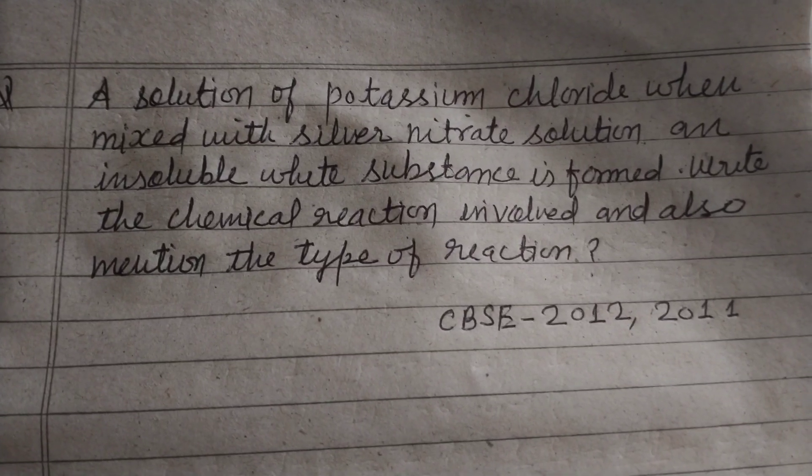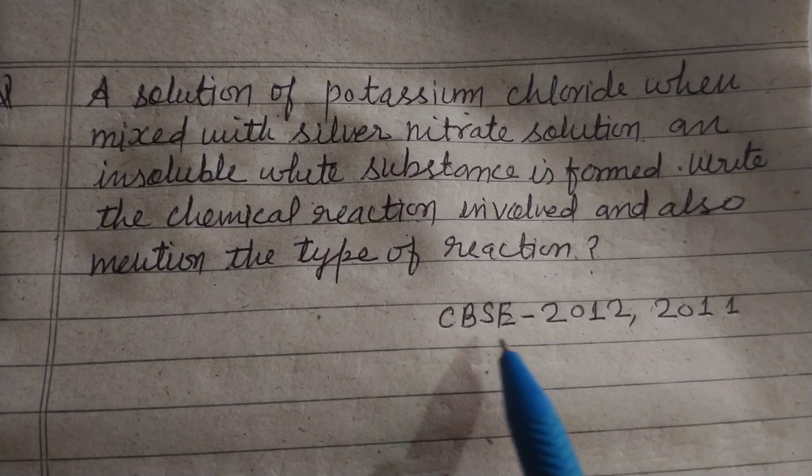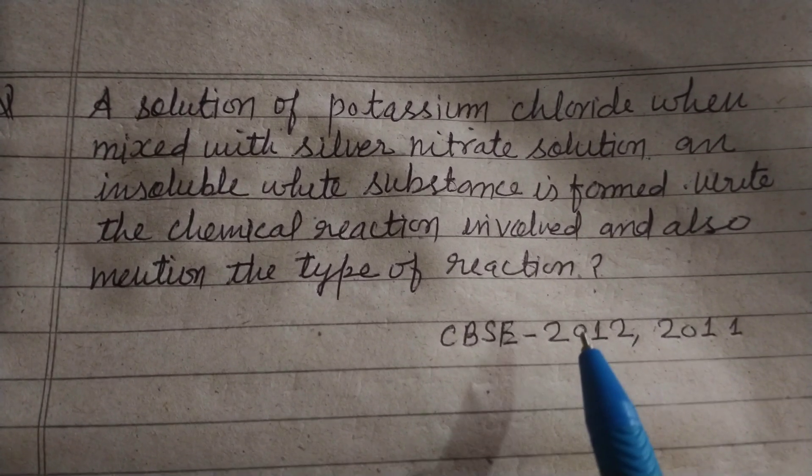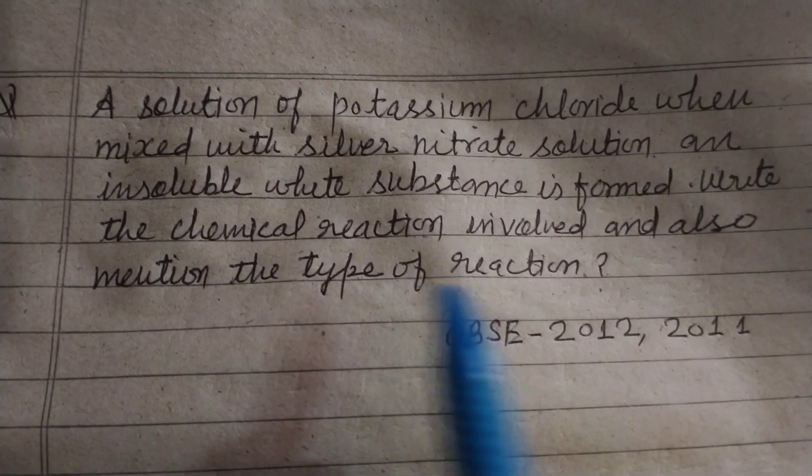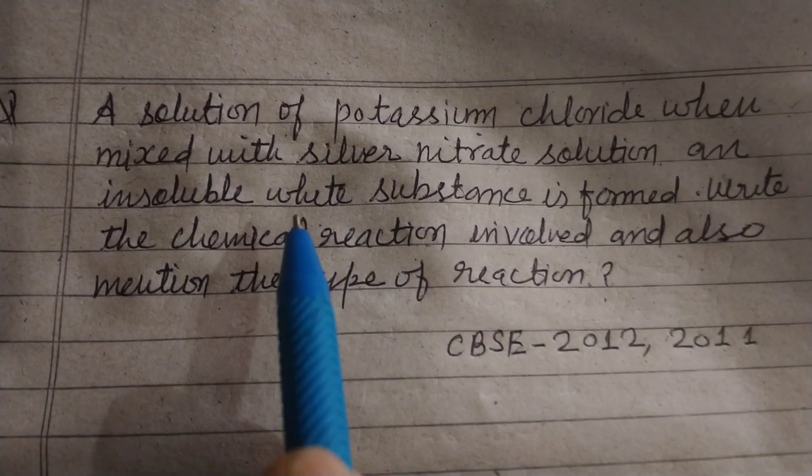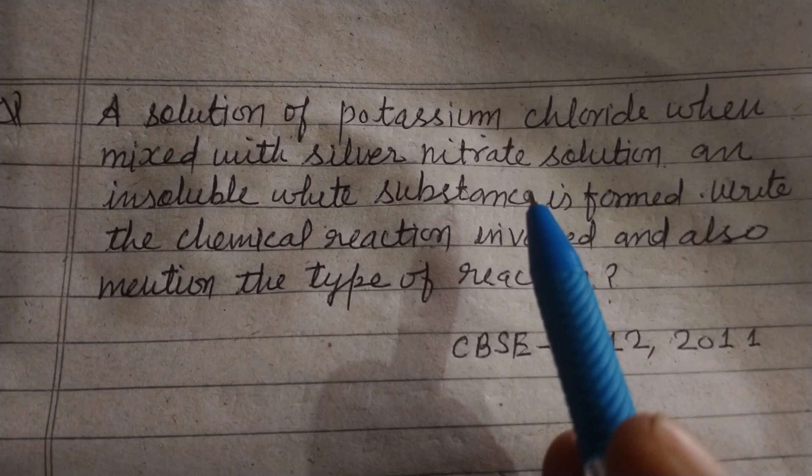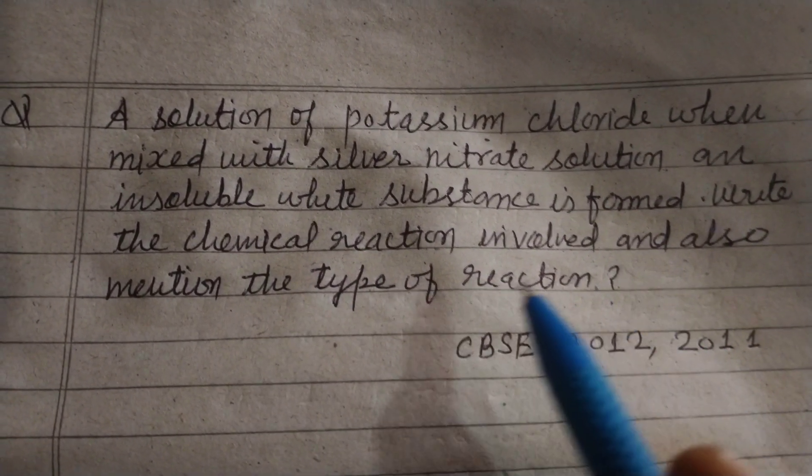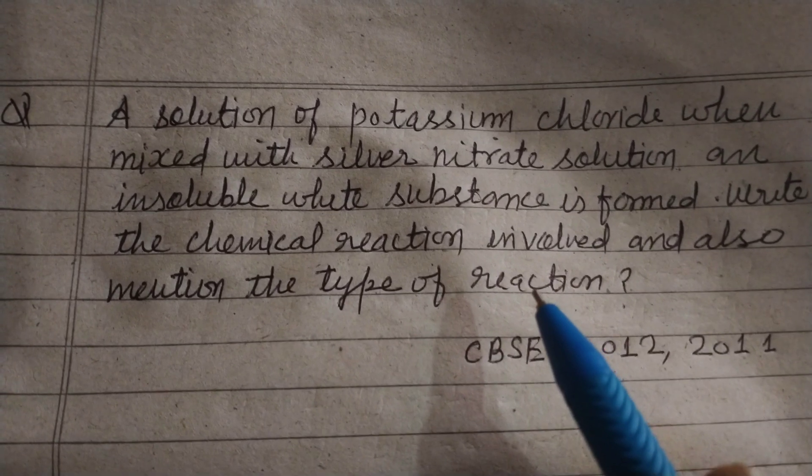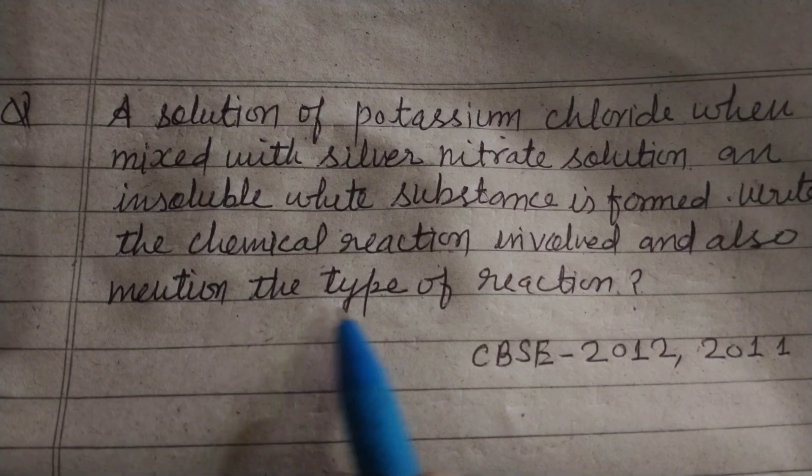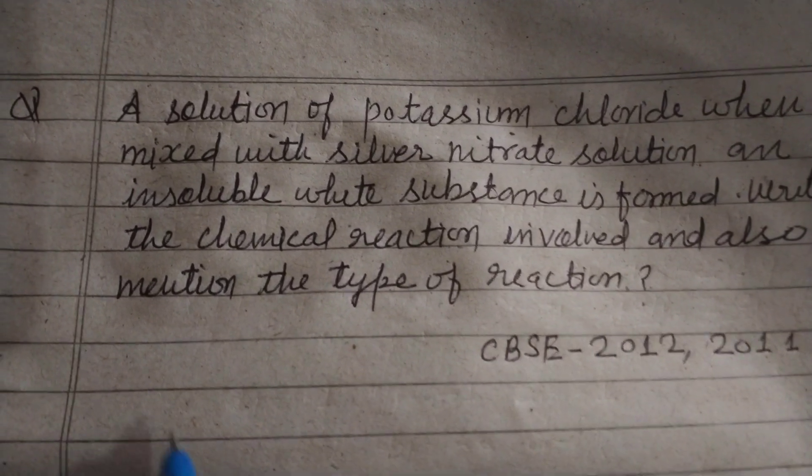Hello students and welcome to this YouTube channel. CBSE 2012-2011 question from chemical reactions: A solution of potassium chloride when mixed with silver nitrate solution and insoluble white substance is formed. Write the chemical equation reaction involved and also mention the type of reaction.